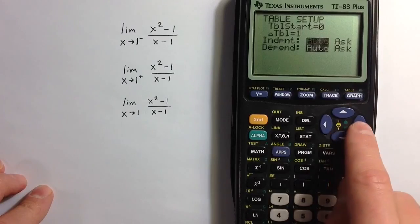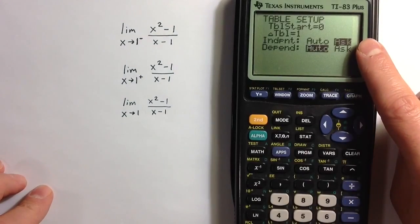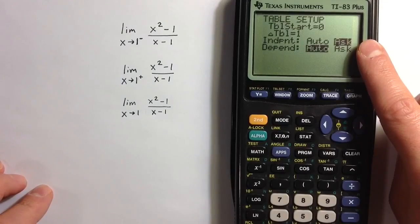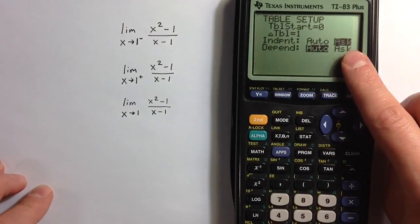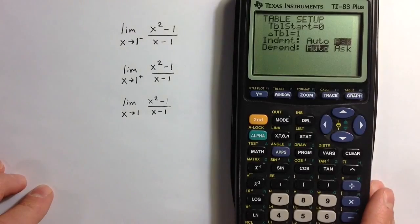And I want to change the independent variable to ask so that I can choose the x value to be whatever I'd like. And then it will automatically calculate the dependent variable from that.